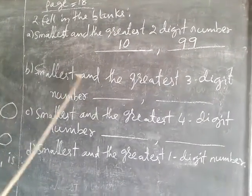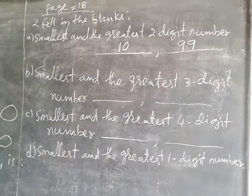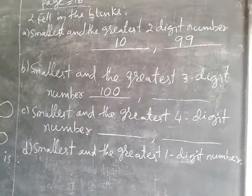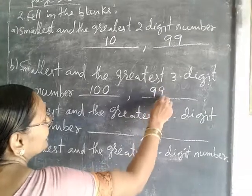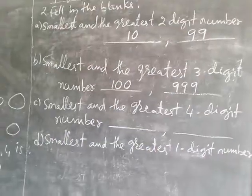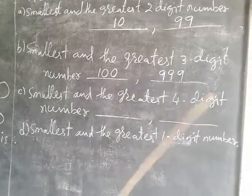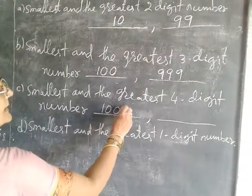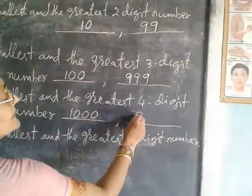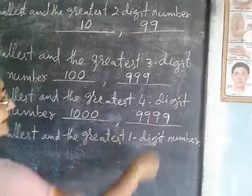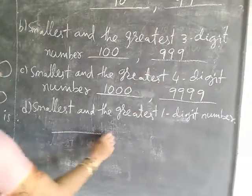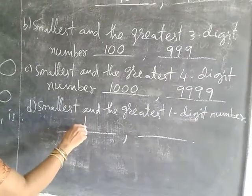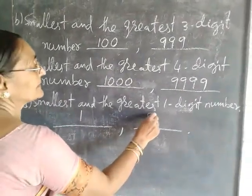Then B: smallest and greatest three-digit number. The smallest three-digit number is one hundred and the greatest is nine hundred and ninety-nine. Then C: smallest and greatest four-digit number. The smallest four-digit number is one thousand and the greatest is nine thousand nine hundred and ninety-nine. Then D: smallest and greatest one-digit number. The smallest one-digit number is one and the greatest one-digit number is nine.